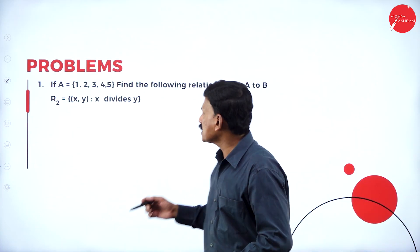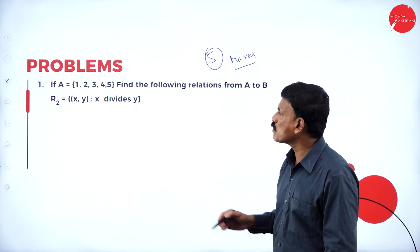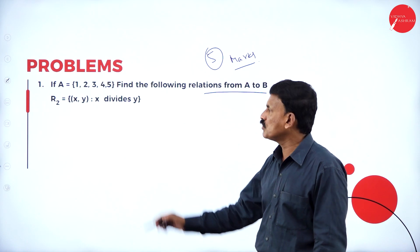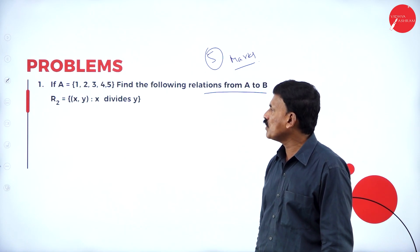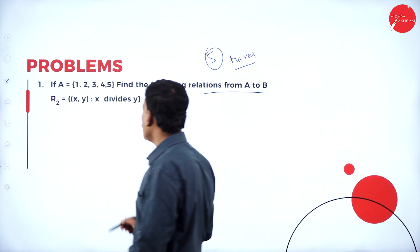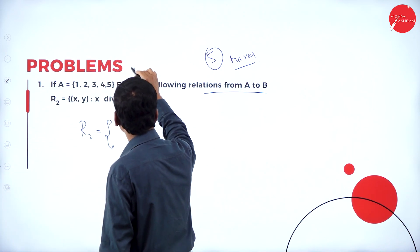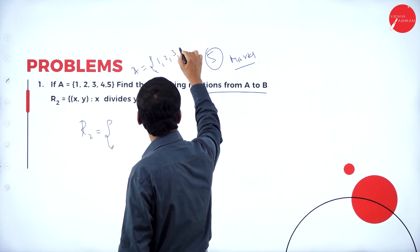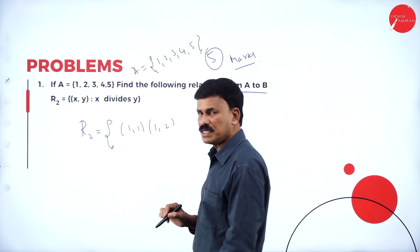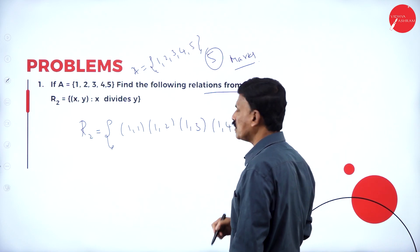This is an important type of example — expect this for 5-mark questions. If A = {1, 2, 3, 4, 5}, find the relation R2 = {(x, y) such that x divides y} — meaning the second element is divisible by the first. So: 1 divides 1, 1 divides 2, 1 divides 3, 1 divides 4, 1 divides 5. For 2: 2 does not divide 1; 2 divides 2; 2 does not divide 3; 2 divides 4; 2 does not divide 5.